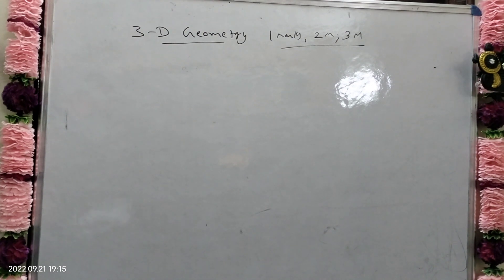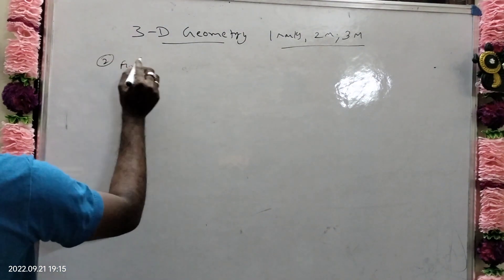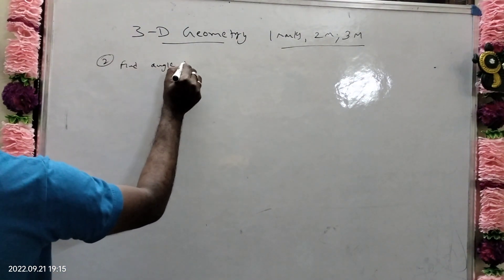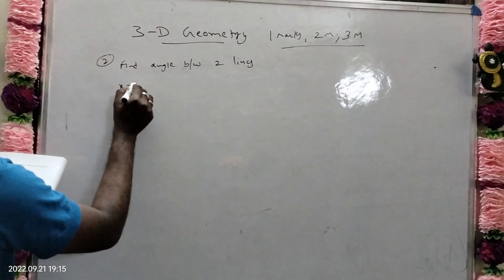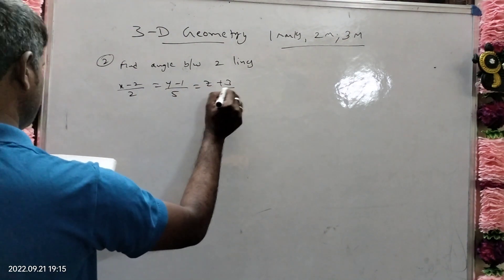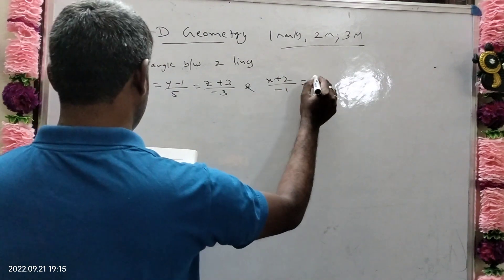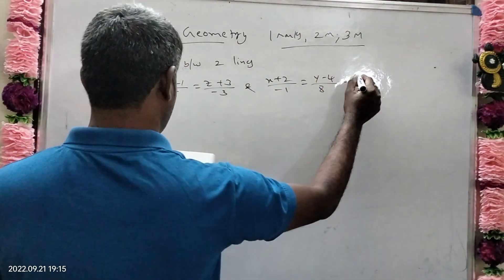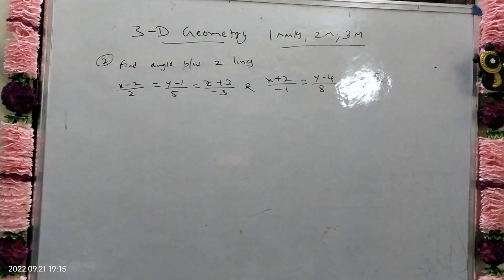Next question: find the angle between 2 lines. The two lines given are: (x−2)/2 = (y−1)/5 = (z+3)/(−3), and (x+2)/(−1) = (y−4)/8 = (z−5)/4. Find the angle between these 2 lines.